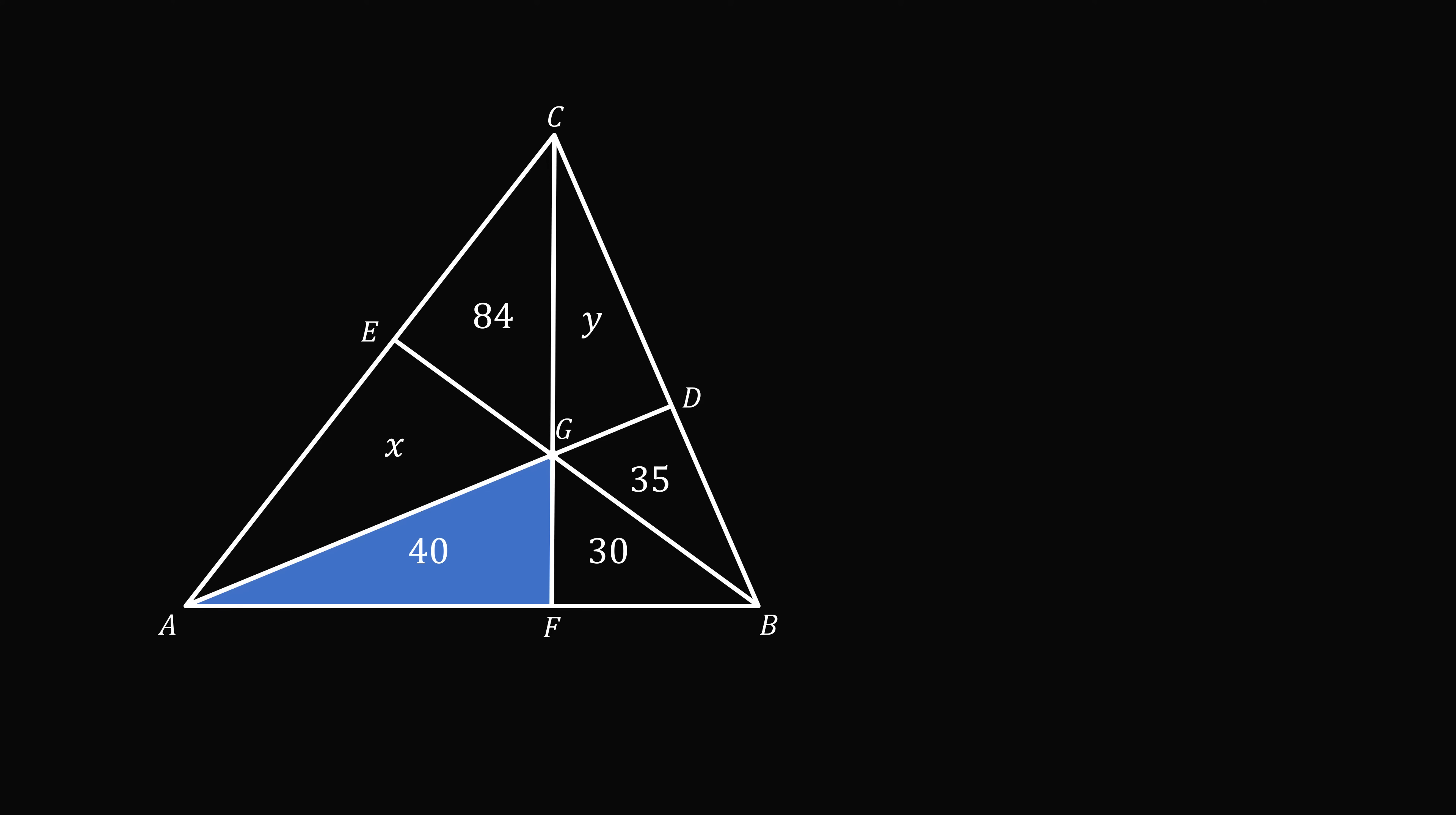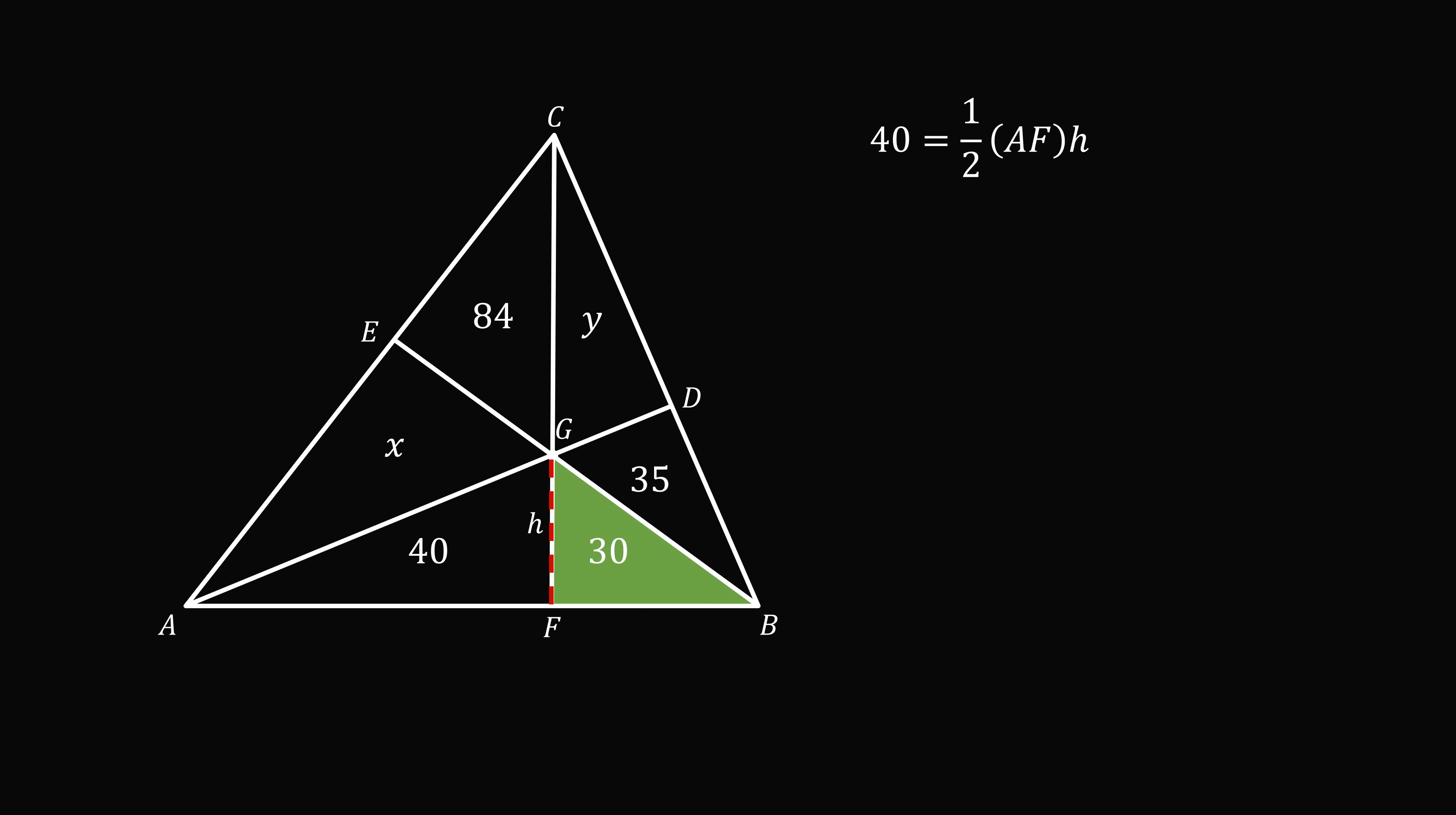Now look at triangle AFG. The base will be AF, and we will construct the height from G upon the base AF, and let's say this has a length equal to h. So the area of this triangle is equal to 40. So we have 40 equals one half times the base AF times the height h. But now let's do the same thing for the triangle BFG. The important part is that it will be the same height h. The base is going to be BF, and the area is equal to 30. So we have 30 equals one half times BF times h.